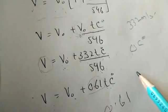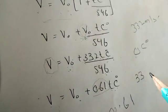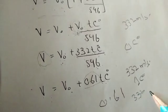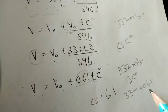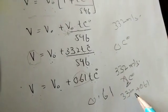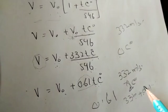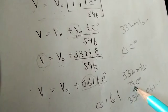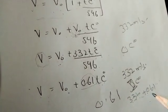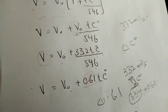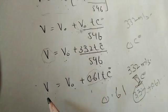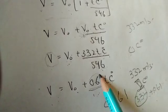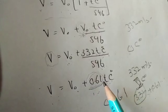This equation shows that the speed of sound increases with temperature such that each centigrade rise increases the speed by 0.61 meters per second. At 0°C it is 332 m/s; at 1°C it becomes 332 plus 0.61; at 2°C it becomes 332 plus 0.61 plus 0.61. For a 5°C rise, it is 332 plus 5 times 0.61. Every centigrade rise adds 0.61 meters per second to the speed of sound.